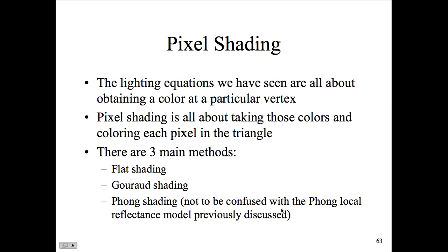Pixel shading gives us our color and effects. The lighting equations obtain a color at a particular vertex, and we can apply an algorithm to shade it — blending color sequences together so we don't have discrete lines between color changes. That's how we get realistic shading. Think about the shade an umbrella casts on the beach on a hot summer day — hard to achieve in computer graphics without algorithms to blend shading and control how sharply or smoothly it transitions from color to color.